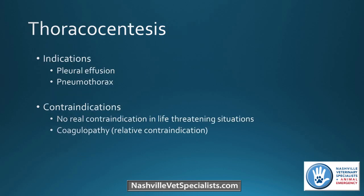Those are the indications for performing a thoracocentesis if you see either of those things. There's no real contraindication in a life-threatening situation. If the patient has a coagulopathy, it's kind of relative. If it's going to be life-saving, go ahead and do the procedure. But if it's only a mild pleural effusion and you're worried about bleeding, you may want to wait a little bit. Use that at your discretion.